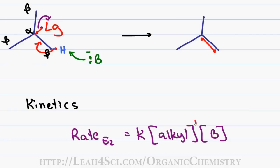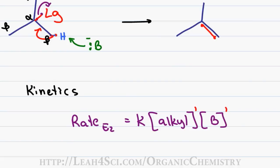The rate shows that the reaction is first order in the alkyl group, first order in the base, and therefore second order overall. Second order is how we get that two in the E2 reaction.